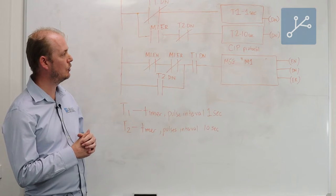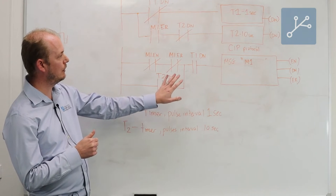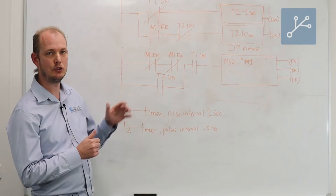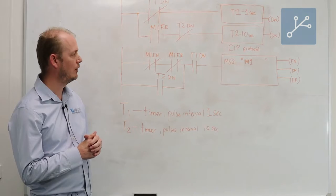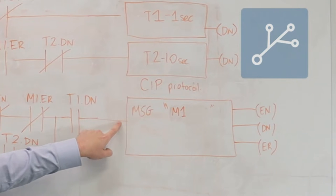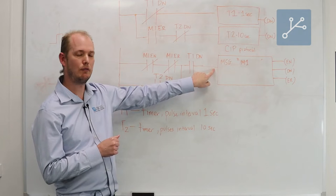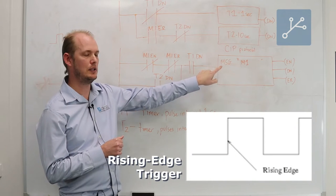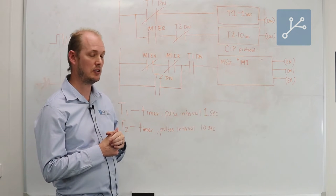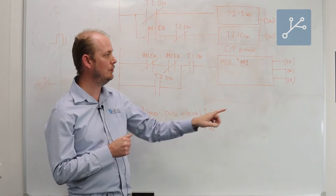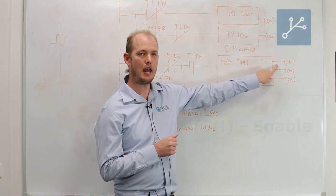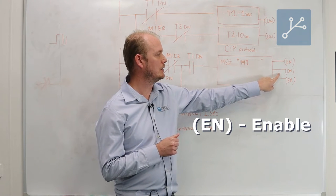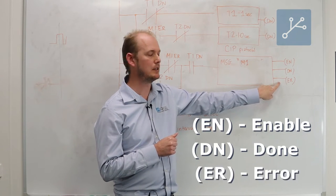In terms of the logic, this would be an example logic to generate or to execute your message instruction. Of importance is the input to the message instruction, so on the transition of logic from off to on, the message instruction is executed by a message queue, and there's three flags which you can see in the logic: the enable, the done, and the error bits.